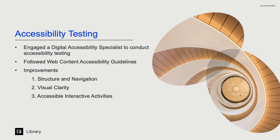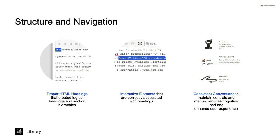Structure and navigation, visual clarity, and accessible activities. Proper structure and clear navigation is essential for assistive technologies like screen readers, as they rely on these cues to provide a coherent user experience.